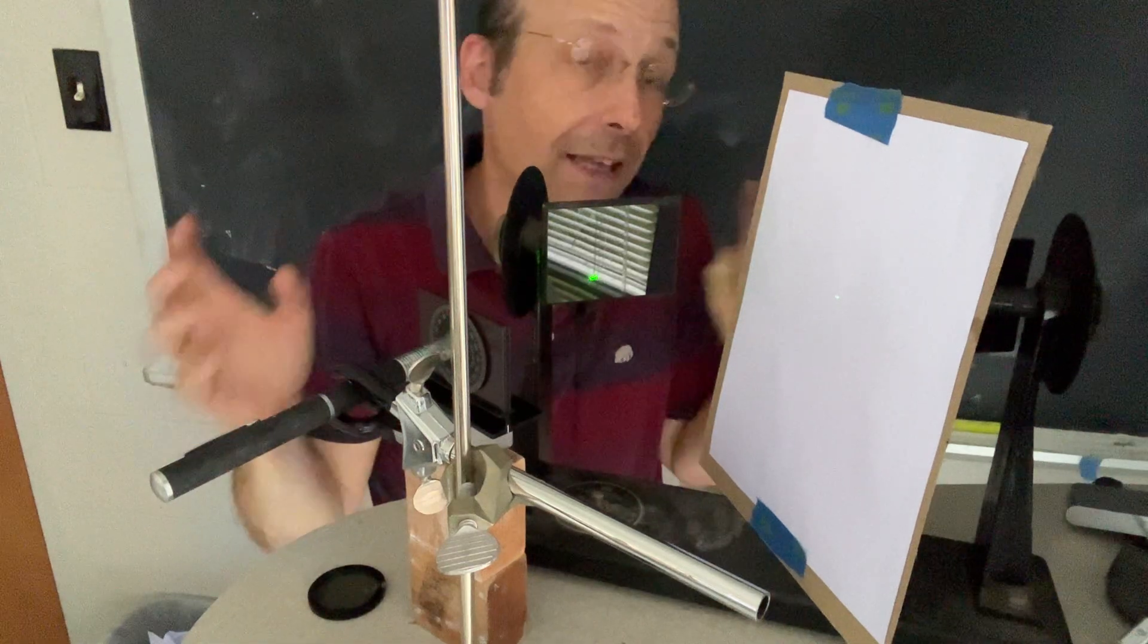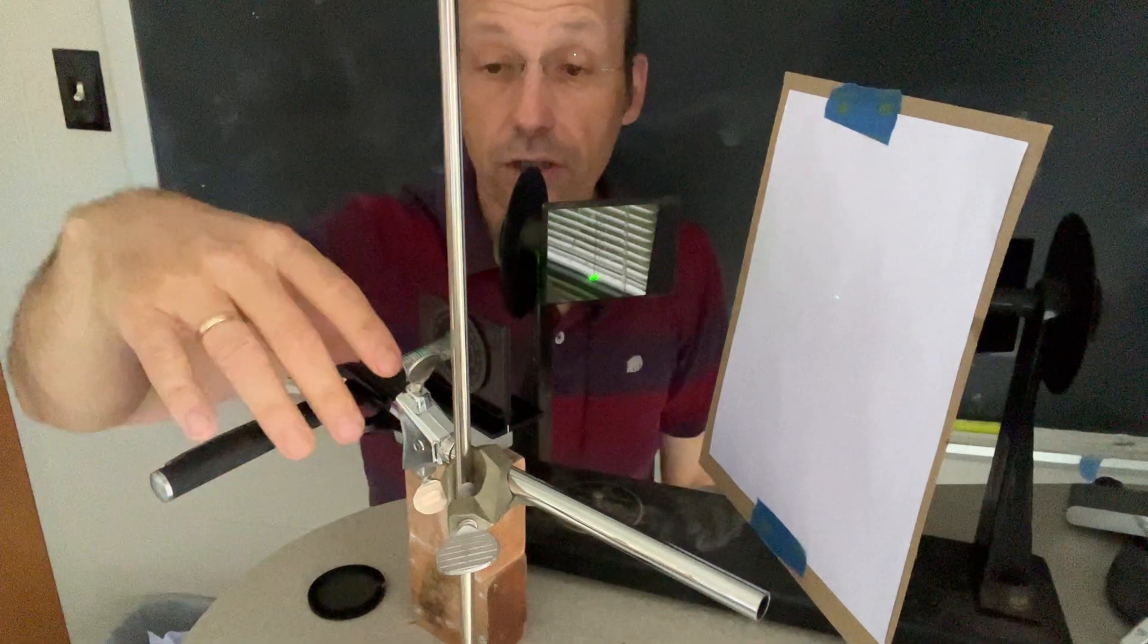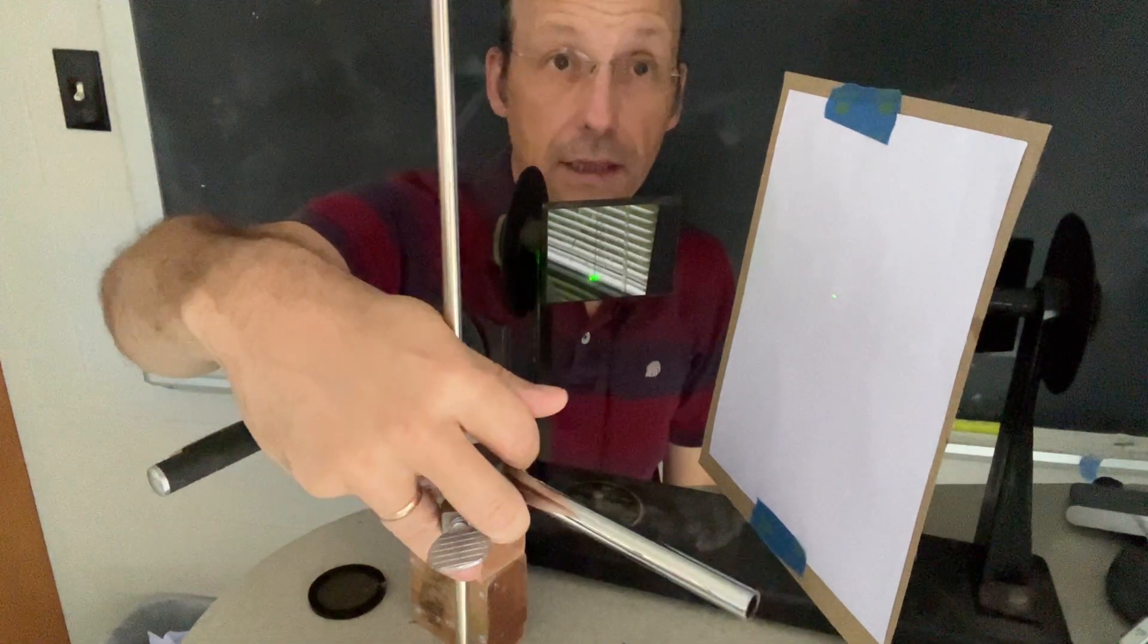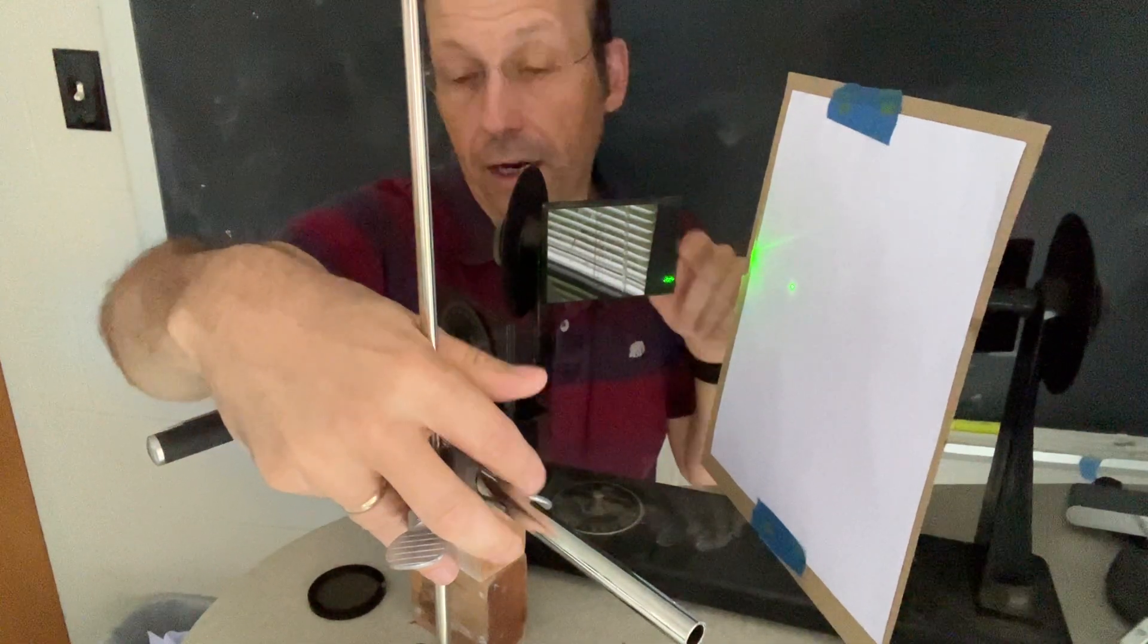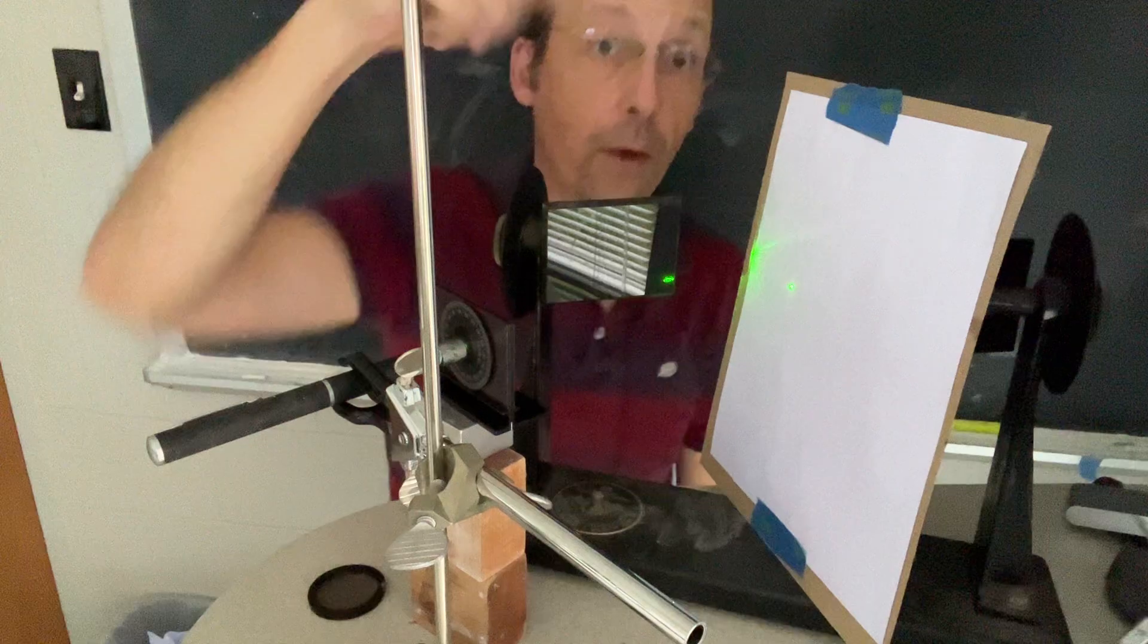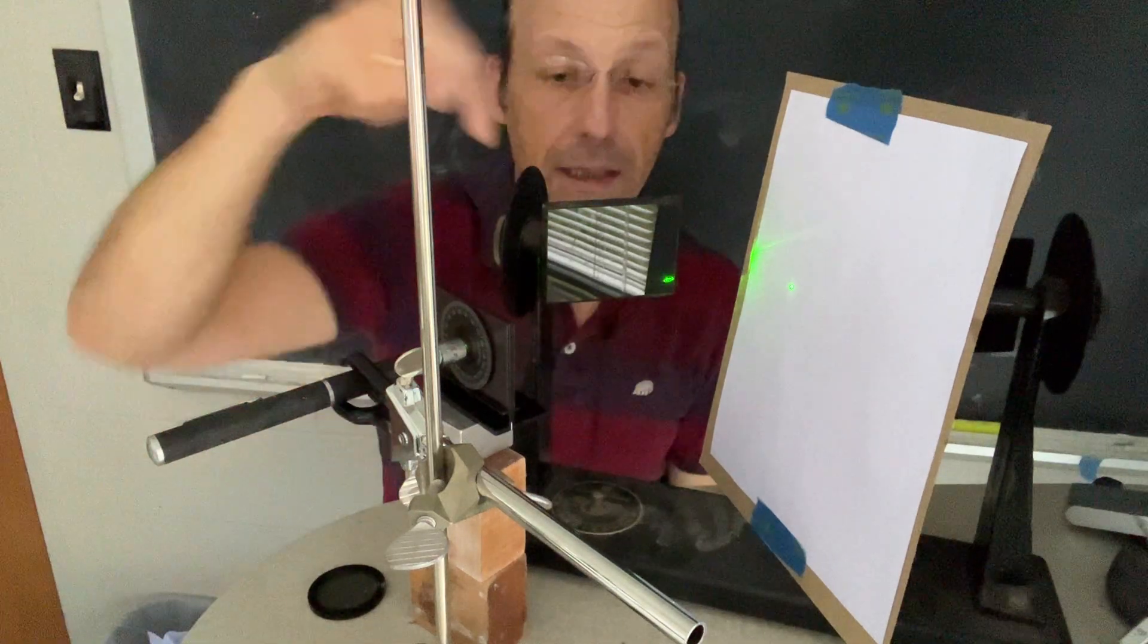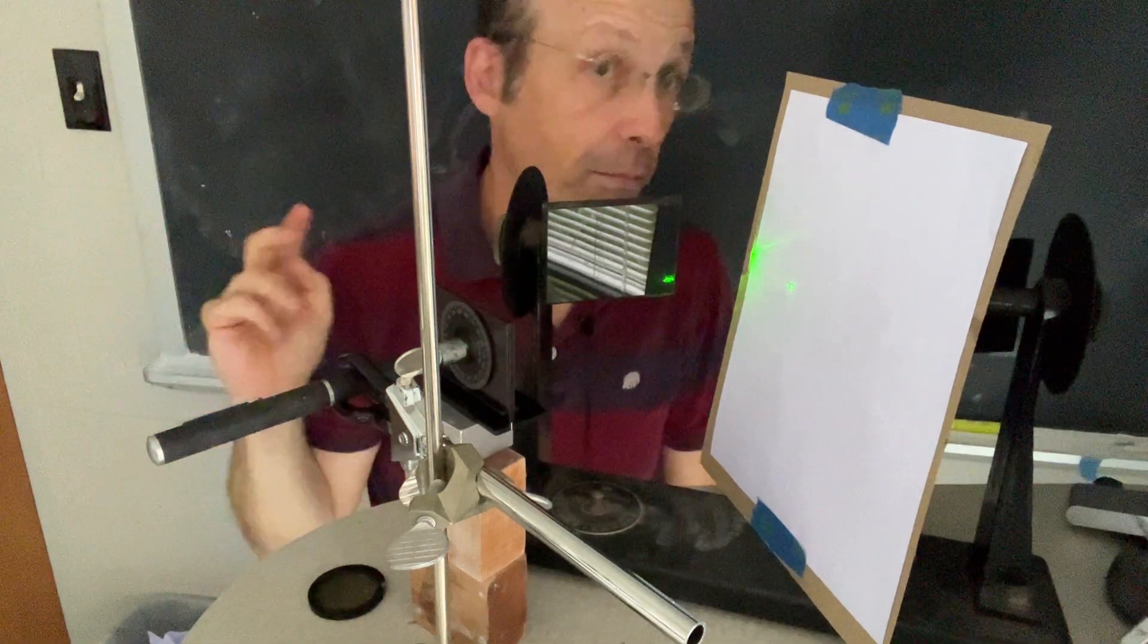And so just so you can see that it's not a trick, if I change the angle of the laser, the dot comes back right. So it's only at a particular angle and we call this Brewster's Angle that light reflects and is polarized.